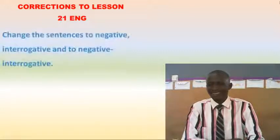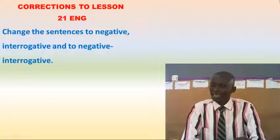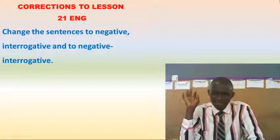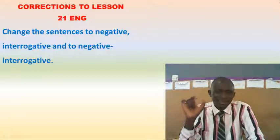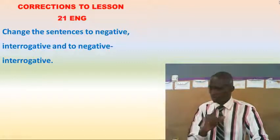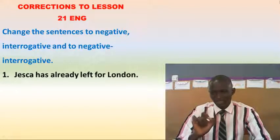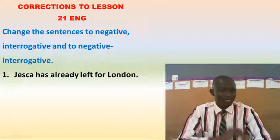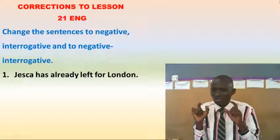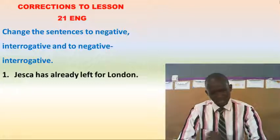Let's have a look at the answers. You had the instruction: change the sentences to negative and interrogative. Mark the word 'interrogative' — it may seem unfamiliar, but it simply means a sentence in question form. A negative interrogative means making that question a negative one. Remember, 'already' is used only in a positive or affirmative sentence.